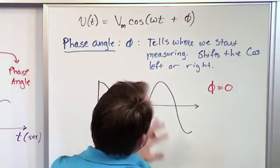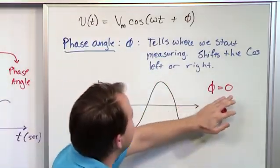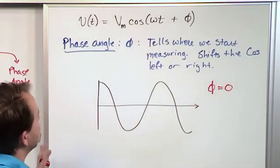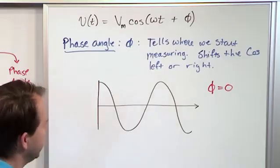So this would be the case when there is no phase angle. Phase angle is zero. So in other words, if there's no phase angle or no phase shift is another way to talk about it, just a regular old cosine function, it looks like the standard thing that you would get.